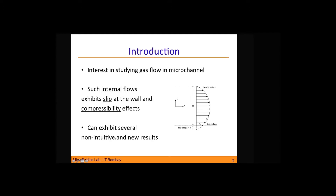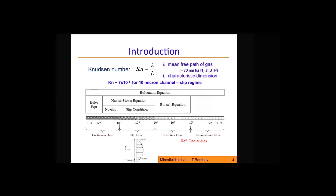Some of these non-intuitive effects I will be talking about. This essentially arises because in such flows a new non-dimensional number — the Knudsen number — becomes relevant. The Knudsen number is defined as the ratio of the mean free path of the gas to the characteristic length scale of the passage. To give a sense: if you have a 10-micron passage with air under standard conditions, you will find a Knudsen number of approximately 10 to the minus 2.